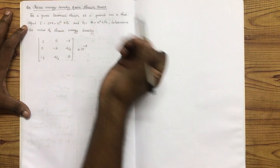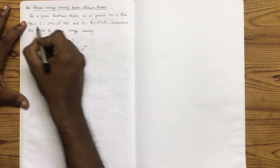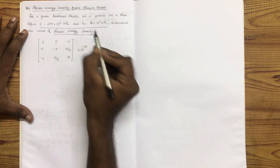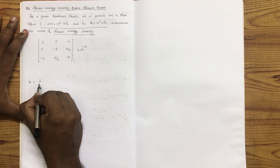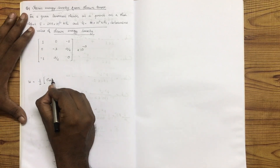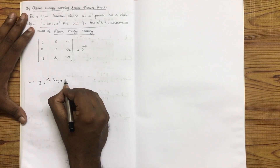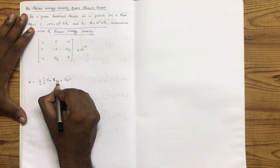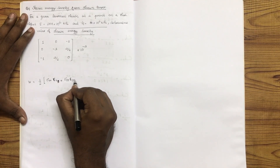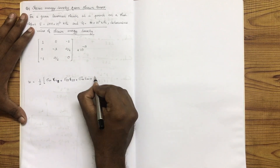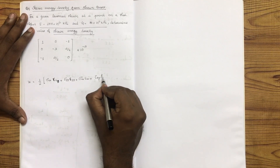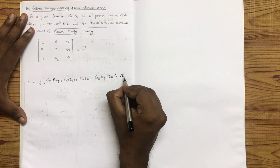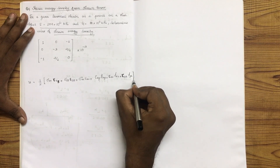Strain energy density is a strain tensor quantity. For a given tensorial strain at a point on a steel object, we need to determine the values of strain energy density. The formula is U = 1/2 into (σxx·εxx + σyy·εyy + σzz·εzz + τxy·γxy + τxz·γxz + τyz·γyz).